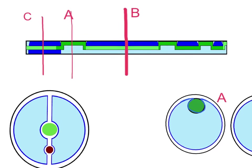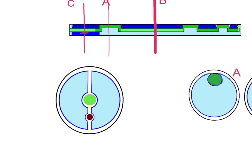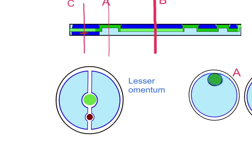You'll remember that where the ventral mesentery is, the liver started to develop. The part of the mesentery between the liver and the stomach is referred to as the lesser omentum. And the part joining the anterior abdominal wall to the liver will ultimately develop into the falciform ligament. Both of these are derivatives of the ventral mesentery.